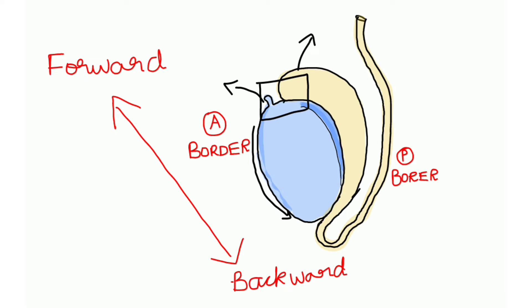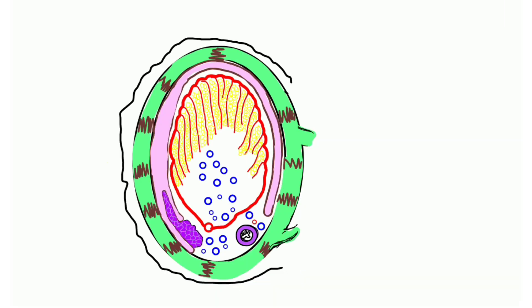On the posterior border, the tunica vaginalis is deficient. On the lateral surface, the epididymis splits the testes into one cavity, and the tunica vaginalis is formed there — that space is called the sinus of epididymis.